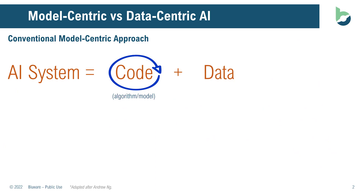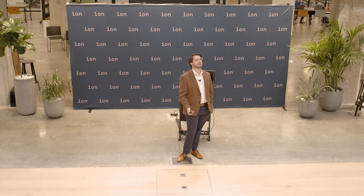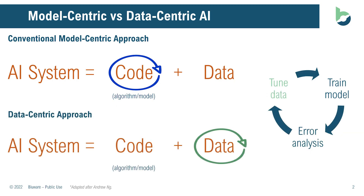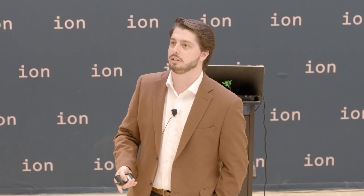What we'd like to do first is make a key differentiation between the current view, which is model-centric AI, versus data-centric. Previously, people focus on the model — they'll train it, do some error analysis, fine-tune the hyperparameters, and then continue to iterate. They focus specifically on the code itself. In the data-centric world, instead of focusing on the latest complicated model, we take a focus towards the data. If we focus on providing better labels and better training data to the model, it'll actually perform significantly better and converge to a solution faster.